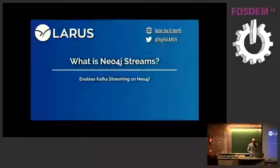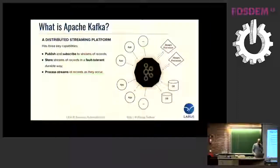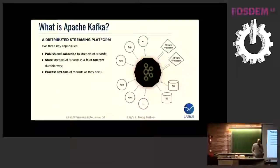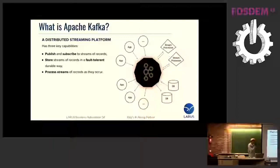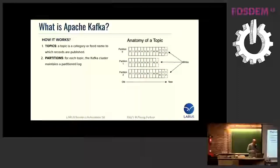So what is Neo4j Streams? It's a Neo4j plugin that enables Kafka streaming on Neo4j. And what is Apache Kafka? It's a distributed streaming platform built on three main capabilities: it allows publishing and subscribing streams of records, it stores these streams of records in a fault-tolerant and durable way, and it processes the stream of records as they occur.